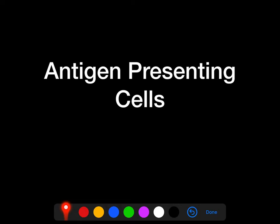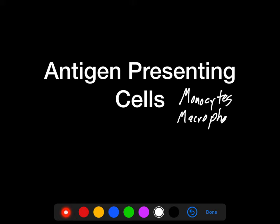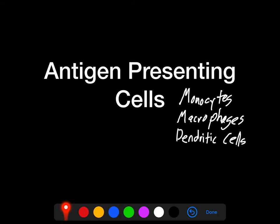Just to remind you, the antigen-presenting cells we've already talked about are things like monocytes, macrophages, and dendritic cells. These are collectively the mononuclear phagocytes, and they are the main antigen-presenting cells — or what I'm going to call the professional antigen-presenting cells.